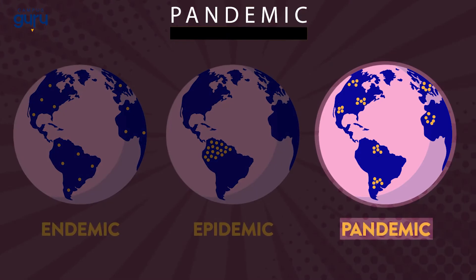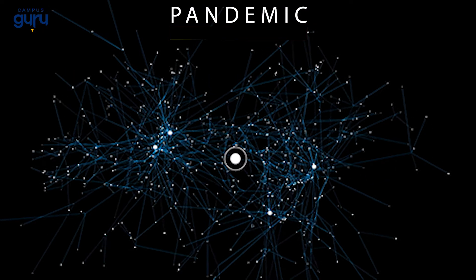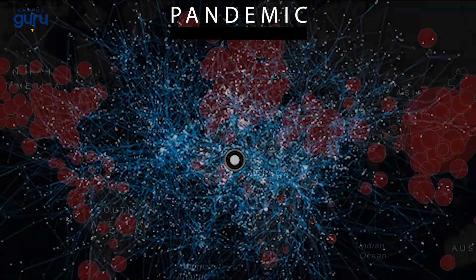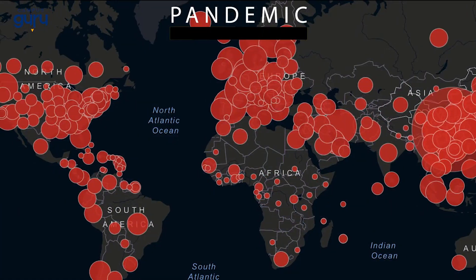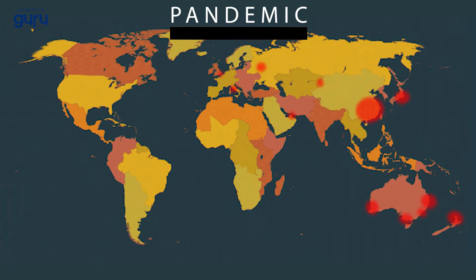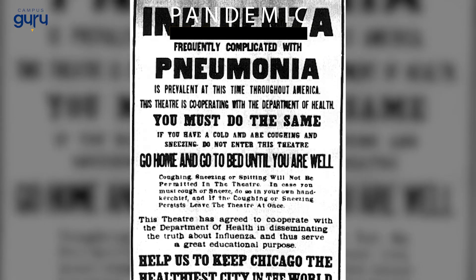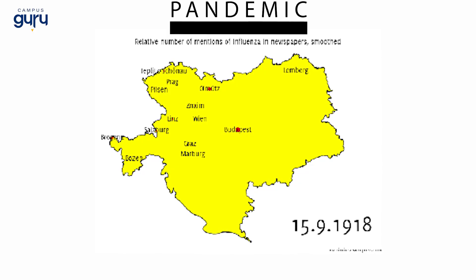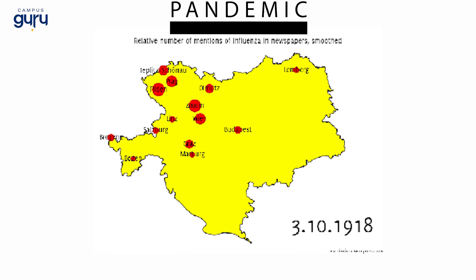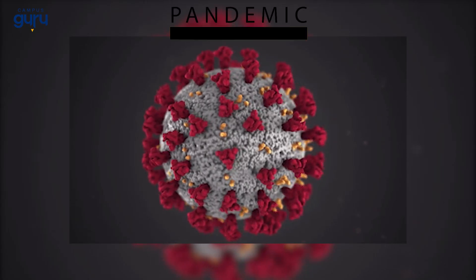Pandemic. A pandemic is the worldwide spread of a new disease or a strain of an existing disease to which the majority of the world's population has no immunity. It is effectively an epidemic on a global scale. The 1918 Spanish flu pandemic which ripped across the globe following World War I is a typical example of pandemic. Other examples include the Black Death, the Great Plagues of the 18th Century and most recently the COVID-19.